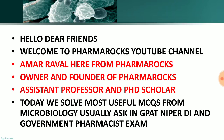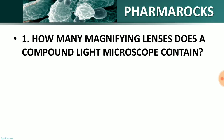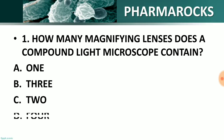Question number one: How many magnifying lenses does a compound light microscope contain? Options are: A) 1, B) 3, C) 2, and D) 4. The right answer is option C — 2. A compound light microscope contains a total of 2 magnifying lenses for magnification purposes.